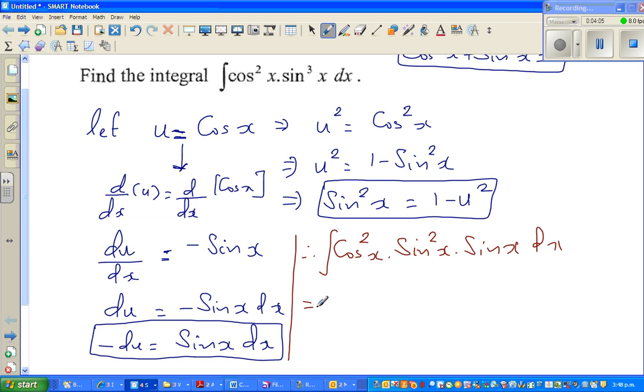Okay, so this is same as, what is cos squared x? Cos squared x is u squared. Times, what is sine squared x? Sine squared x is 1 minus u squared times, what is sine x dx? Sine x dx is minus du. So the whole thing has changed into u.